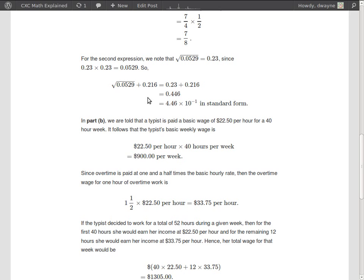Once we have the square root we just need to add the decimals. So we have 0.023 and we are adding 0.216. Put a 0 here. We have the same three decimal places for both numbers. 0 plus 6 is 6, 3 plus 1 is 4, and 2 plus 2 is 4. Bring down the point, and 0 plus 0 is 0. So you have 0.446.